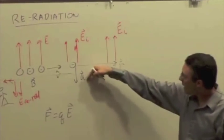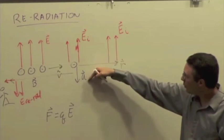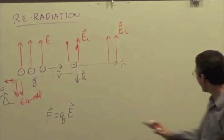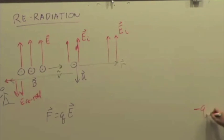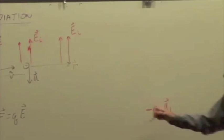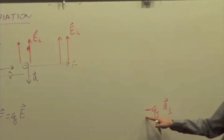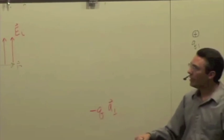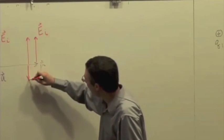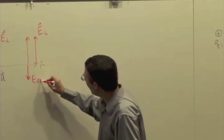We have accelerated charges downward, these negative charges downward. The direction, again, is given by negative Q times A perpendicular. A perpendicular is downward. We have a negative times a negative, giving us a re-radiation, a re-radiative electric field pointing downward.